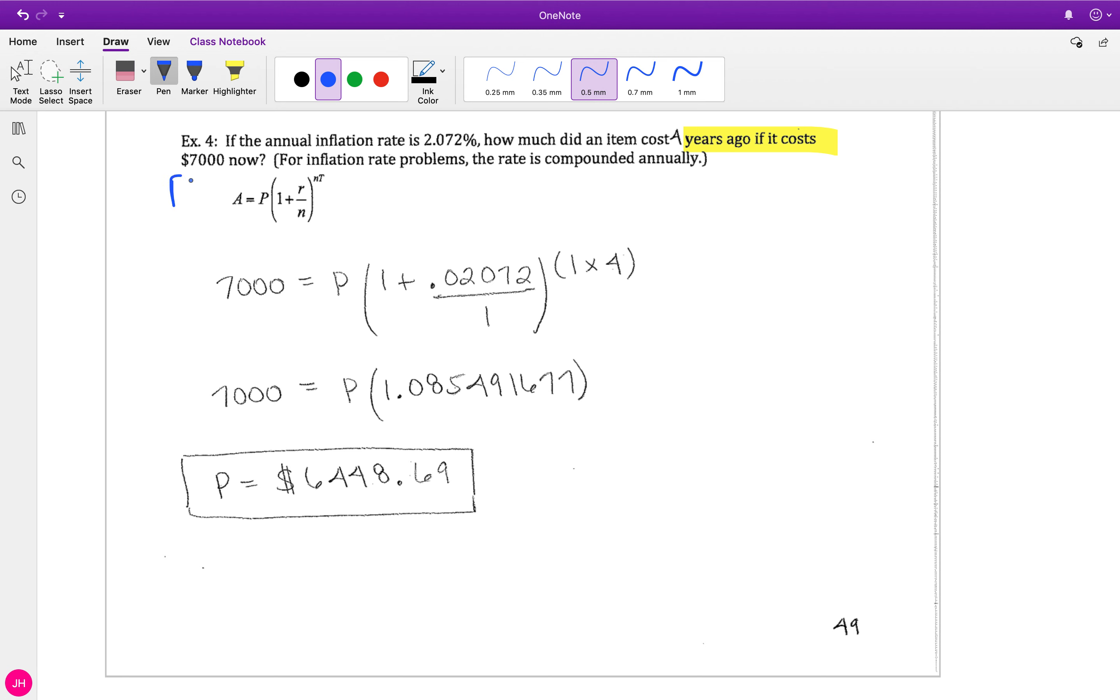Something cost seven thousand dollars now, and we're looking for what it used to cost four years ago. So I'm plugging the seven thousand for A. My interest rate was given to me, and then it tells us that we're gonna compound annually. We don't expect you to know that, so we're just gonna say since it's inflation, n is gonna be one. So n equals one, and then it said four years, so I'm plugging in four.